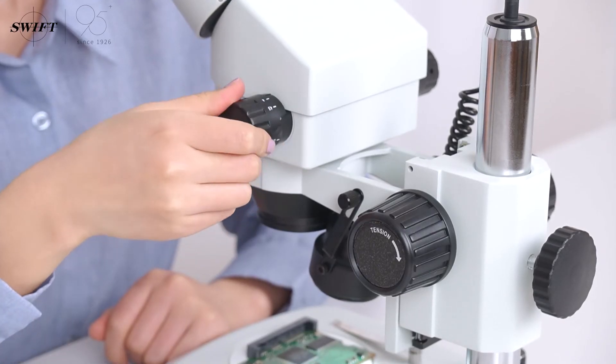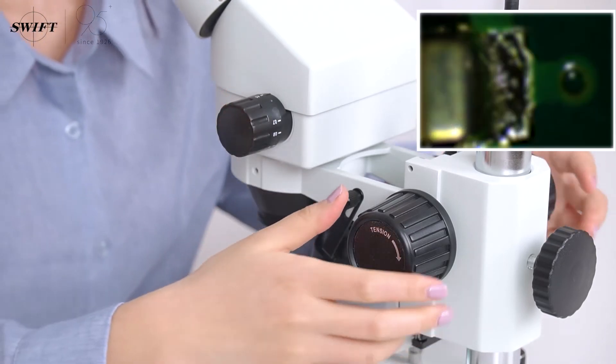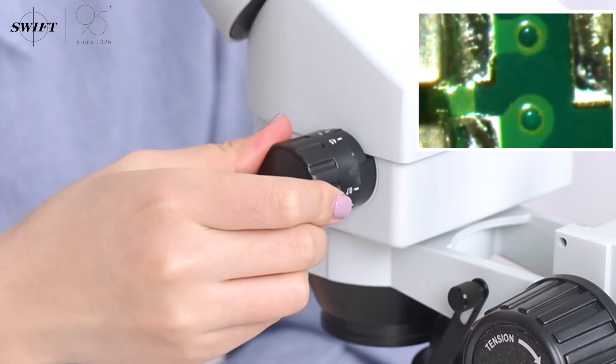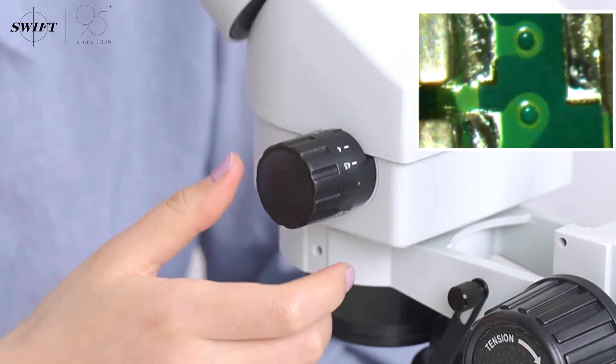Rotate the zoom handle to high magnification and use the focusing hand wheel to adjust the image clearly. Switch the zoom hand wheel to observe the image under the microscope.